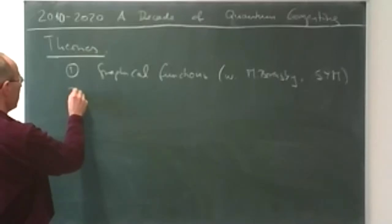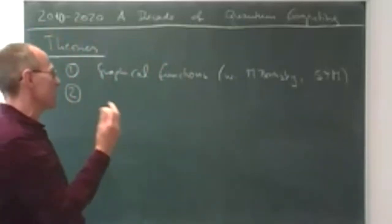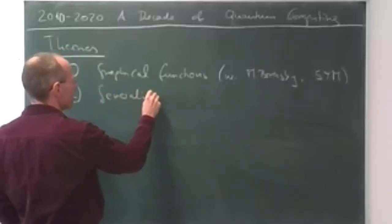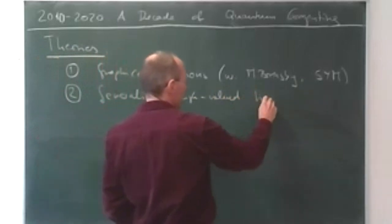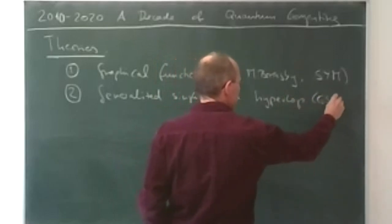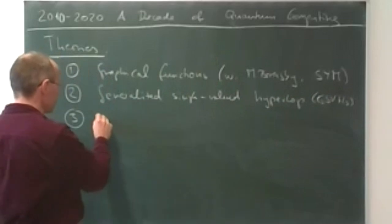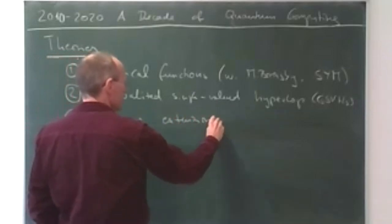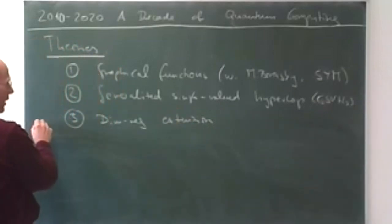That's theory one. You need a second theory to express these amplitudes in terms of functions you can handle. These functions are generalized single-valued hyperlogarithms — GSVH. The third theory is an add-on: a dimreg extension that you may want to have if you have sub-divergent graphs to handle. These are the three theories and they are now being published.